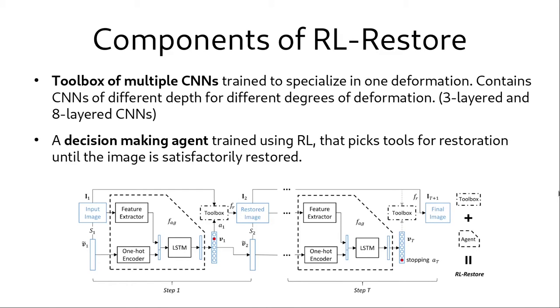The RL restore contains two main components, a toolbox of multiple CNNs each trained to specialize in one particular deformation and a decision making agent that is used to pick an appropriate sequence of tools from the toolbox given the input image.